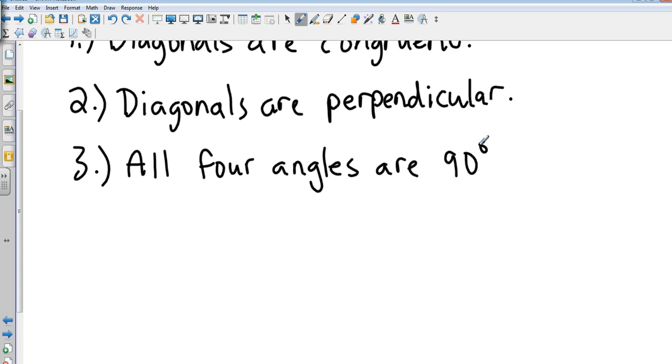Okay, all four angles are 90 degrees. The diagonals in this case also bisect the opposite angles just like they did in a rhombus because a square can be a rhombus. And so those are major differences. So let's take a look at an example.